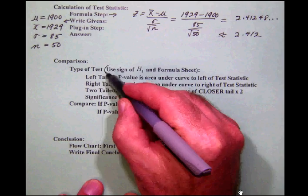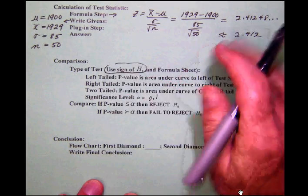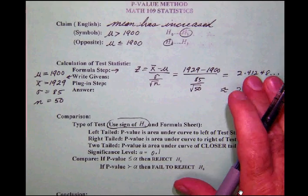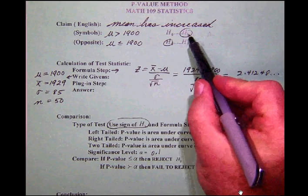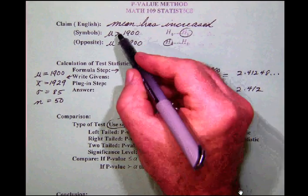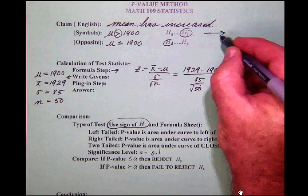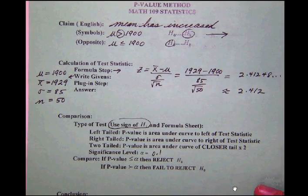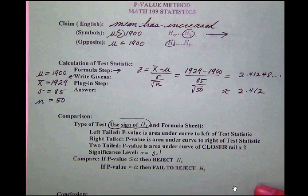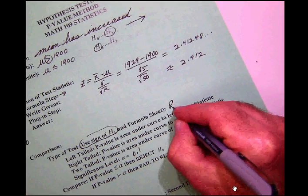So, first of all, the sign of H1. Well, as we look back up, we see here that H1, our alternate hypothesis, has the sign mu is greater than 1900. So think about that greater than sign as an arrowhead pointing to the right, which tells us, then, that the type of test we have is a right tail test.